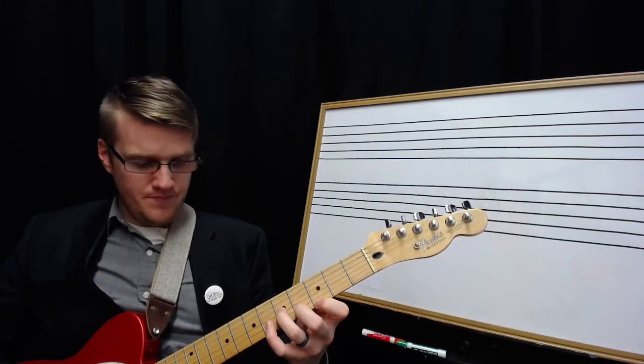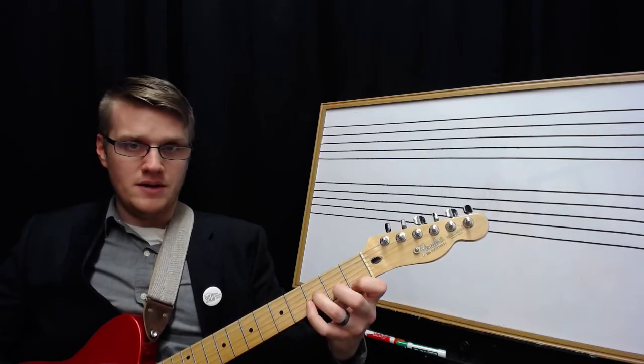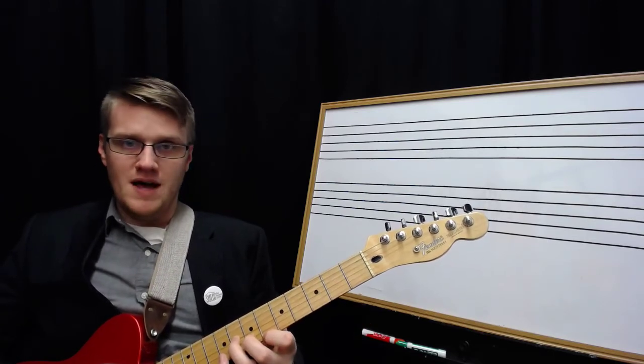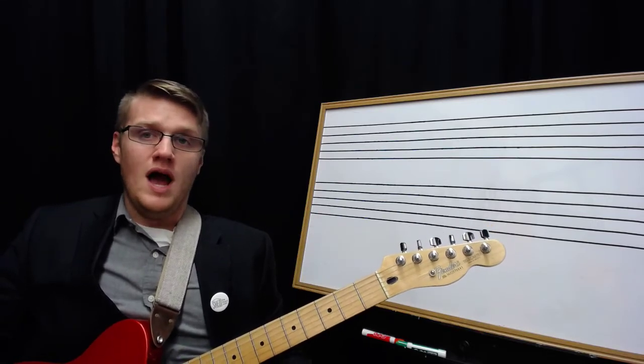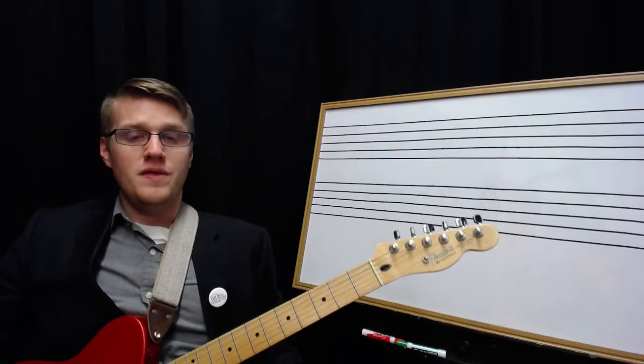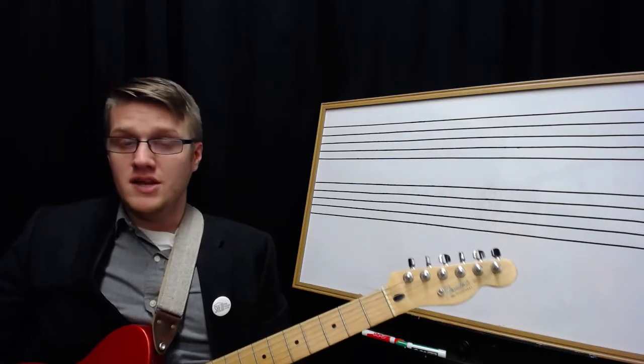So now I'm going to do a minor triad in root position. C minor, F minor, B-flat minor, E-flat minor. So you do that through that same cycle that I did before, on the same string set with the same inversion. And then you do diminished, and then you do augmented.